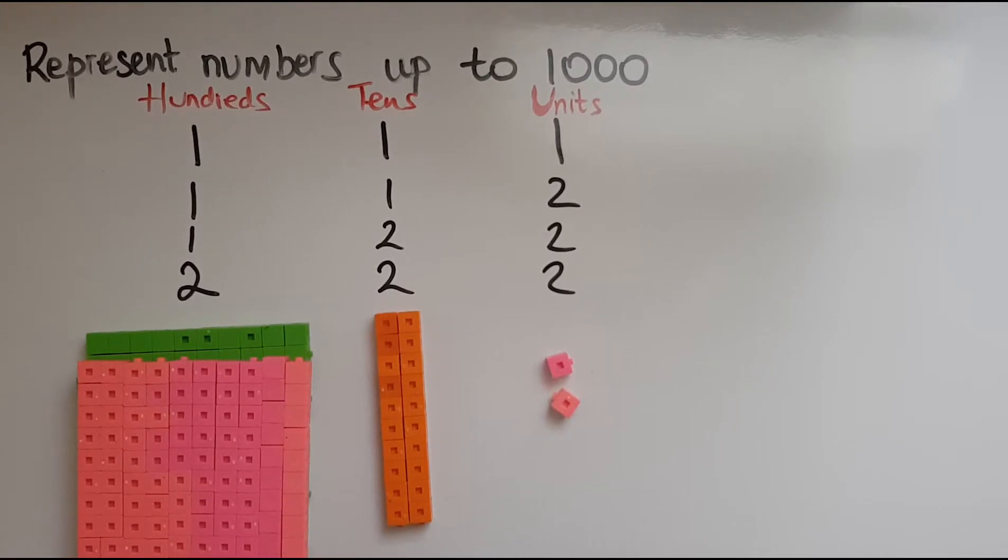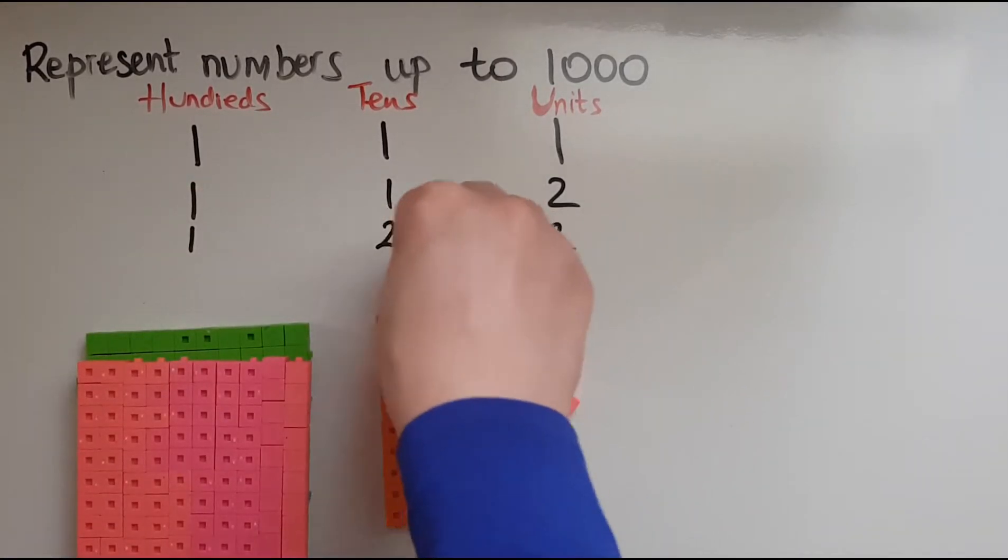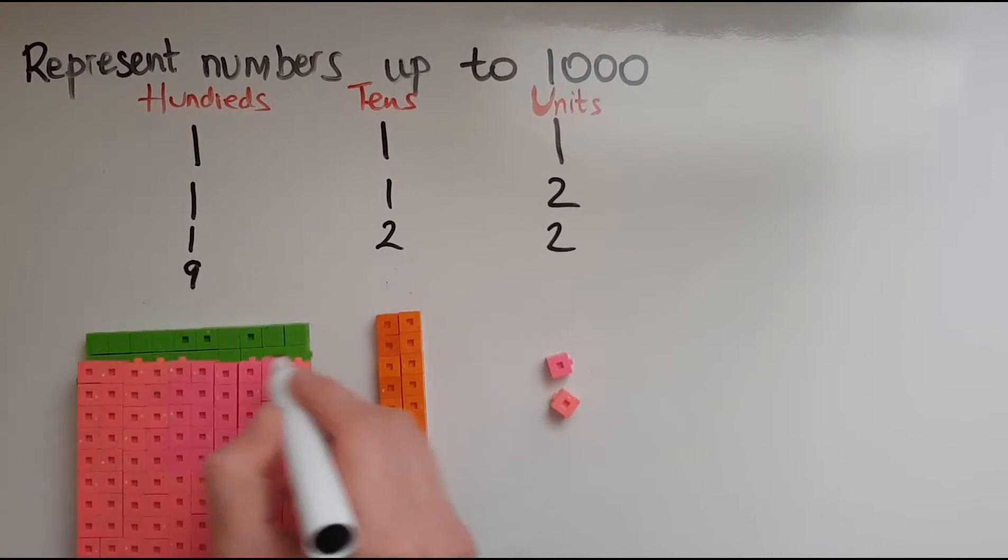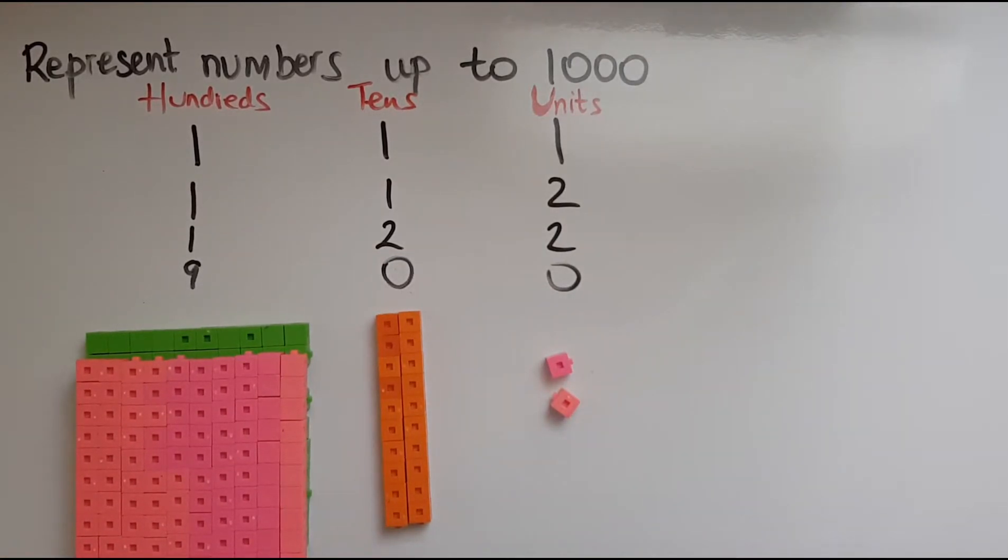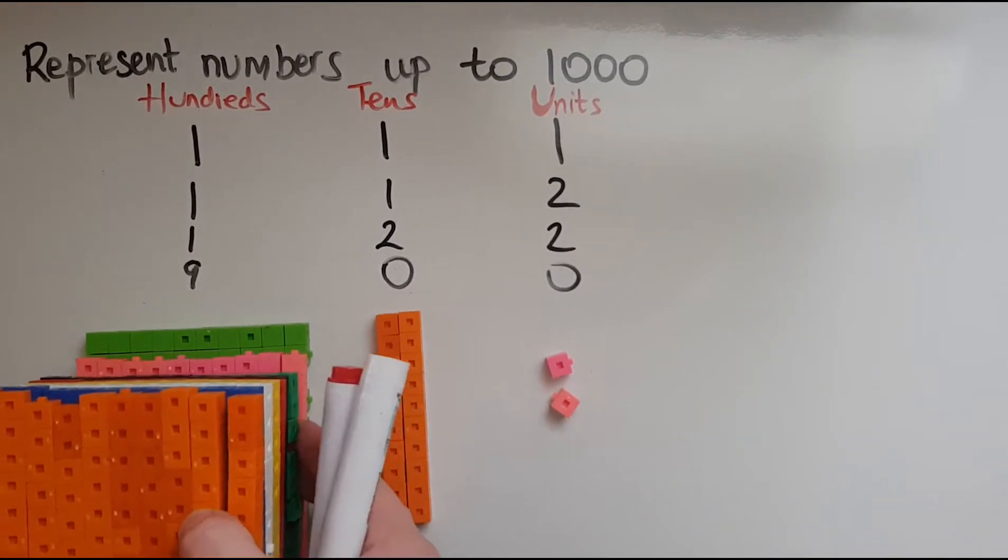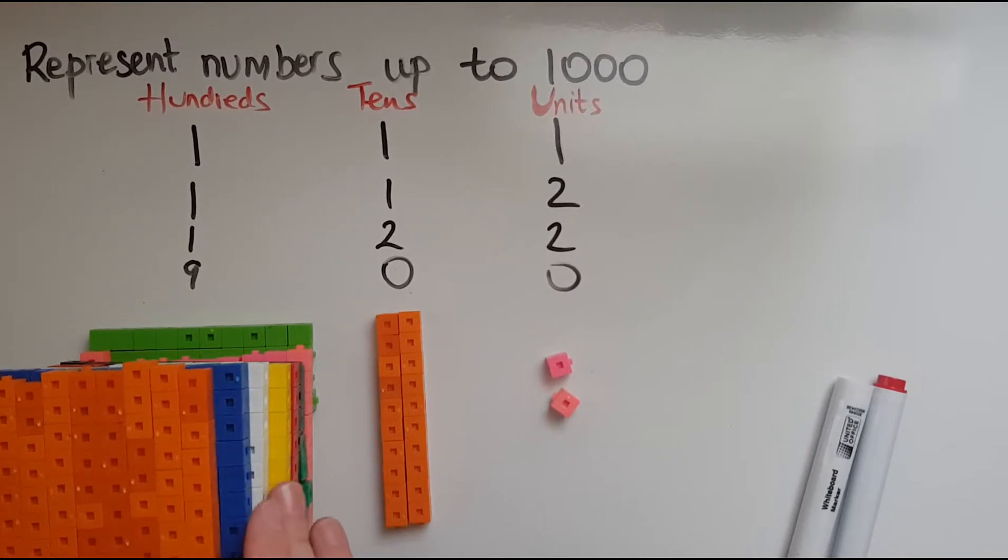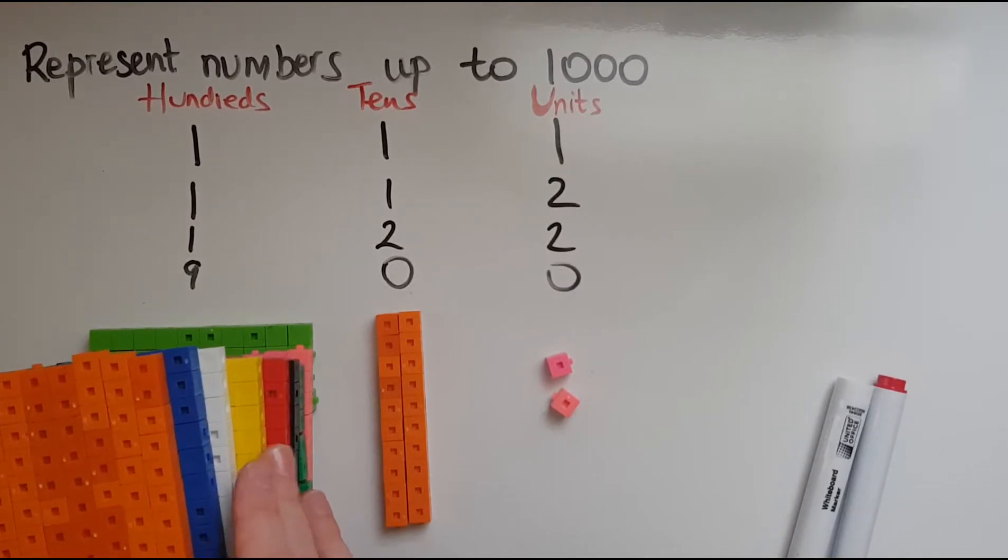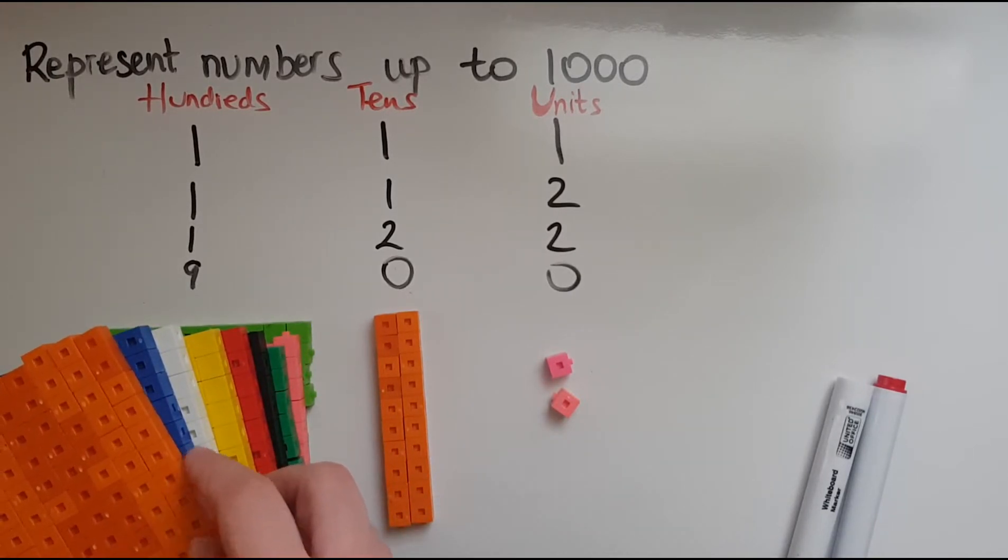So what I'm going to show now is 900. So how I write 900 is this: 900, which shows that there are 9 blocks of 100. So I will bring over 9 blocks of 100.